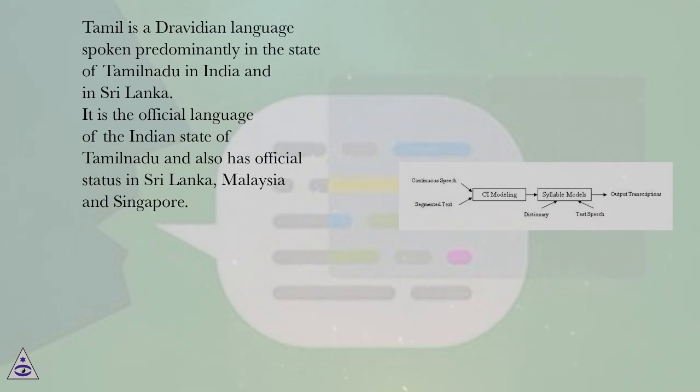Tamil is a Dravidian language spoken predominantly in the state of Tamil Nadu in India and in Sri Lanka. It is the official language of the Indian state of Tamil Nadu and also has official status in Sri Lanka, Malaysia, and Singapore.